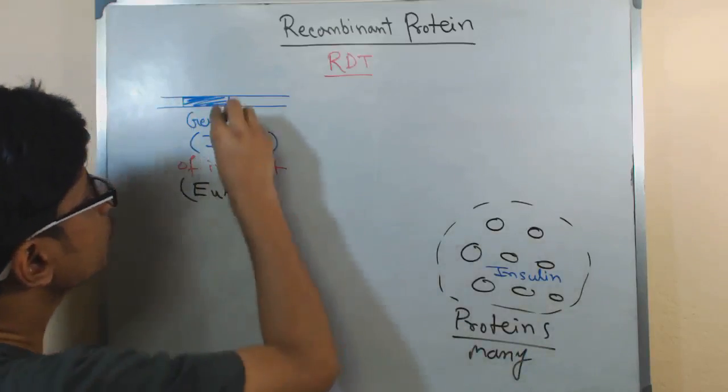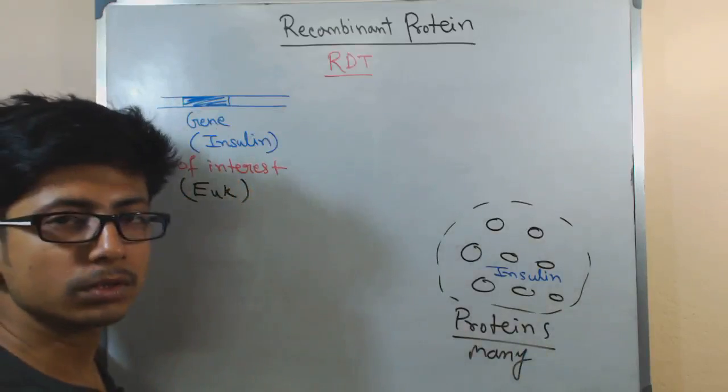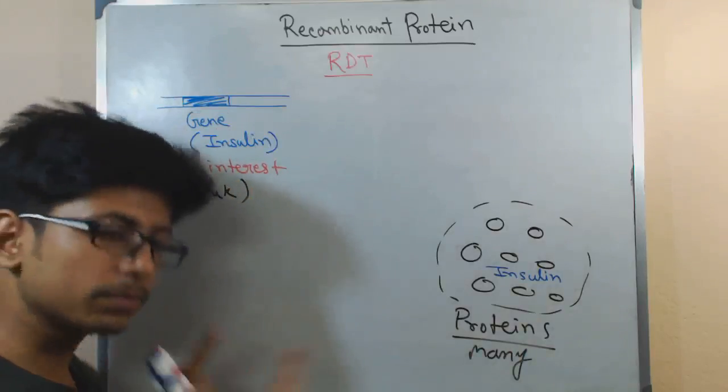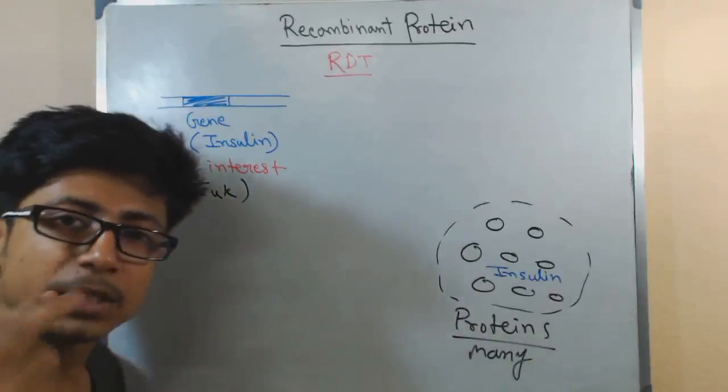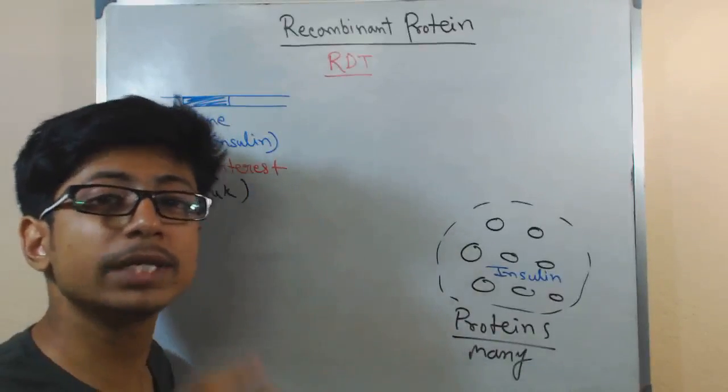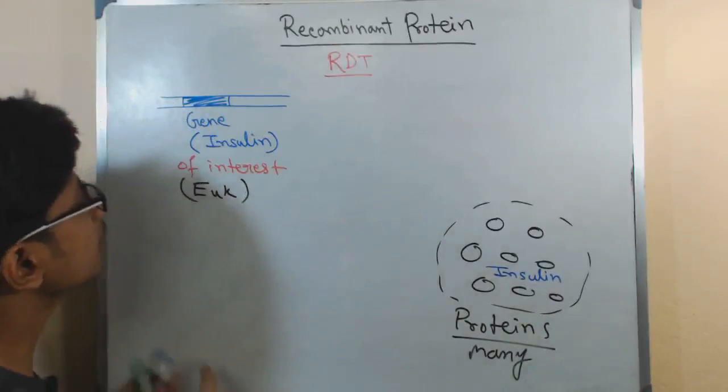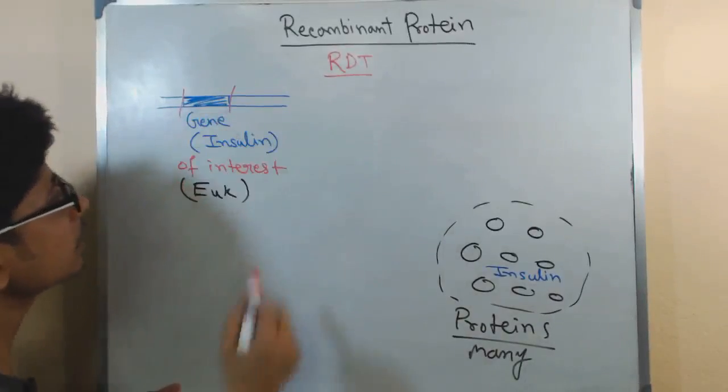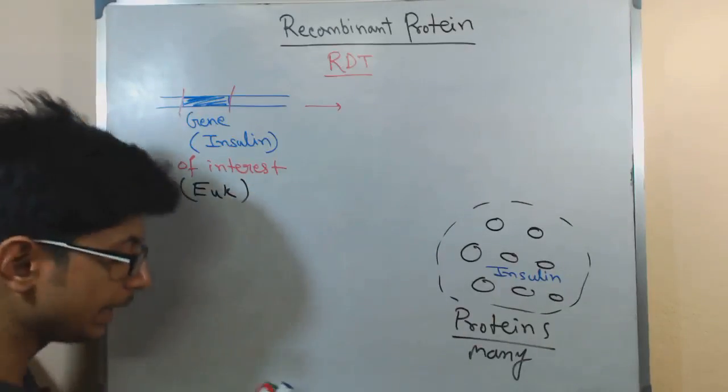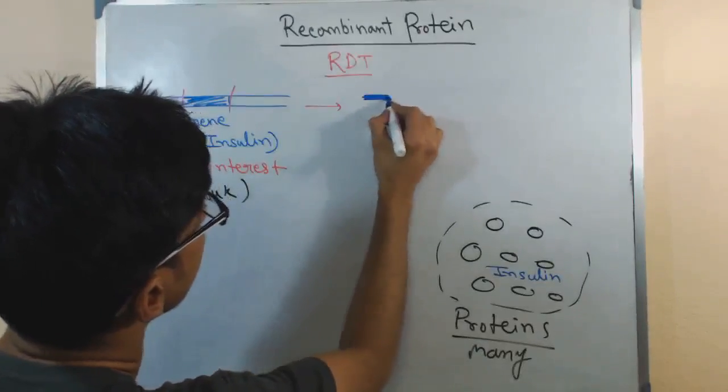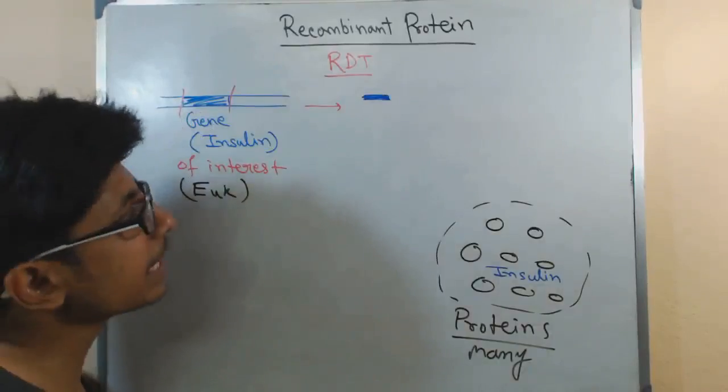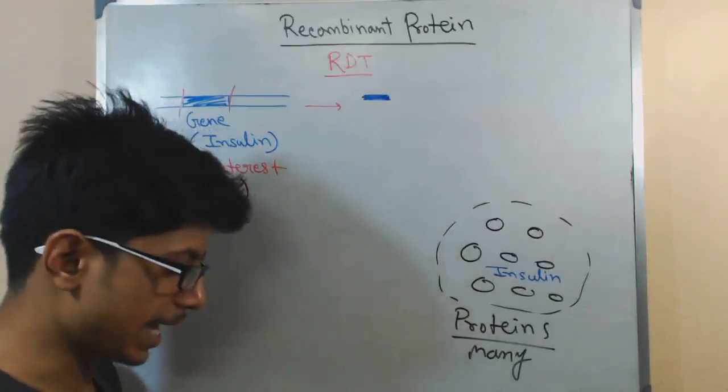We should first take this gene out, the gene of interest out from the whole genome, because the genome is large. We take this gene out by using restriction endonuclease enzyme. We use that enzyme to cleave the two sides of the gene so that we ultimately have only the desired gene. Let's say this is the desired gene in our hand.